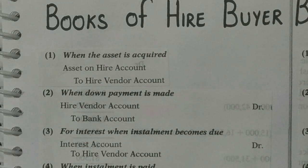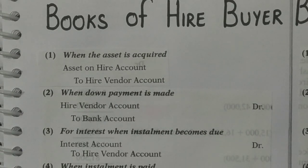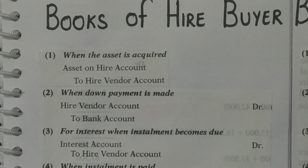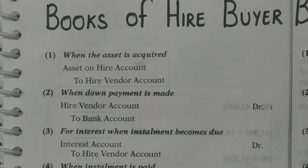When an asset comes into a business, the rule applies: debit what comes in, and credit the vendor. The person who is supplying becomes a creditor, so he will be credited. So the entry will be asset account debited to hire vendor account. If a person has purchased machinery from XYZ Limited, he will pass the entry: machinery debited to XYZ Limited.